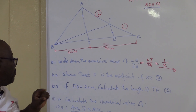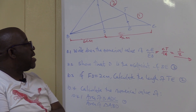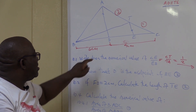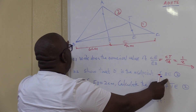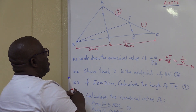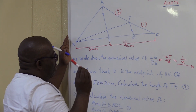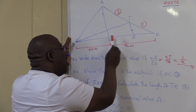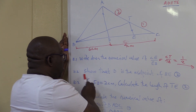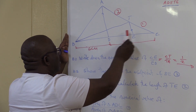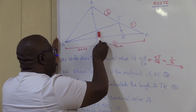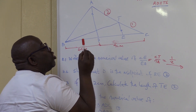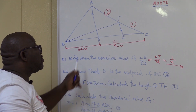That was for one mark. Now: show that D is the midpoint of BE. Midpoint means halfway. D is this point, and BE is this line. We want to show that D is halfway — meaning the distance from here to here must equal the distance from there to here. We know the distance from B to D is 6 centimeters, so we need to show the other distance is also 6 centimeters so that D is the midpoint.